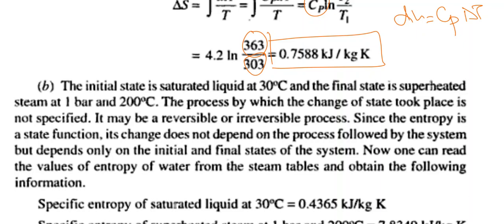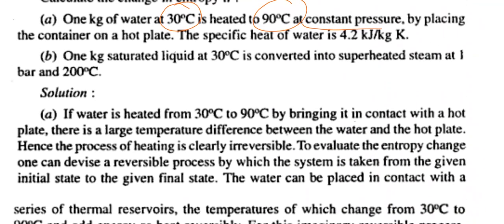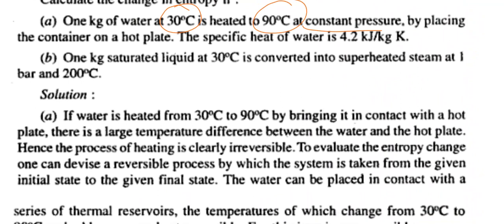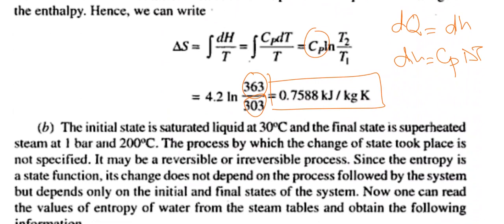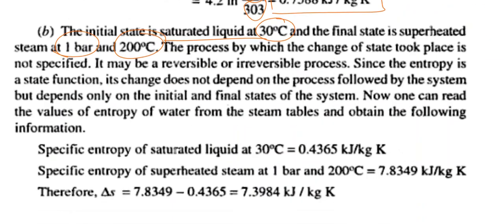The process by which the change in state takes place is not specified. Since we need a pressure to use the steam table, and the first condition only gives temperature, we focus on the given conditions: state 1 is saturated liquid at 30°C, and state 2 is superheated steam at 1 bar and 200 degrees centigrade.